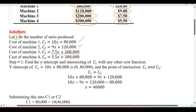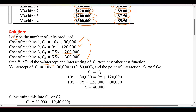Now we need to plot C1, C2, C3, and C4 on a graph to determine which machine is least costly over different ranges of output.